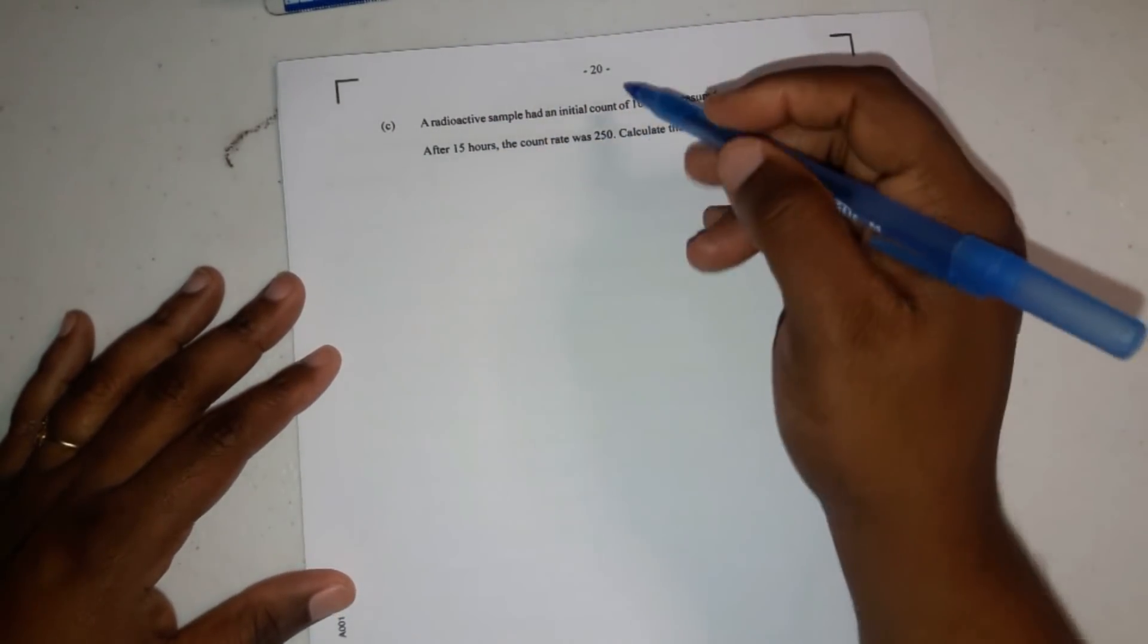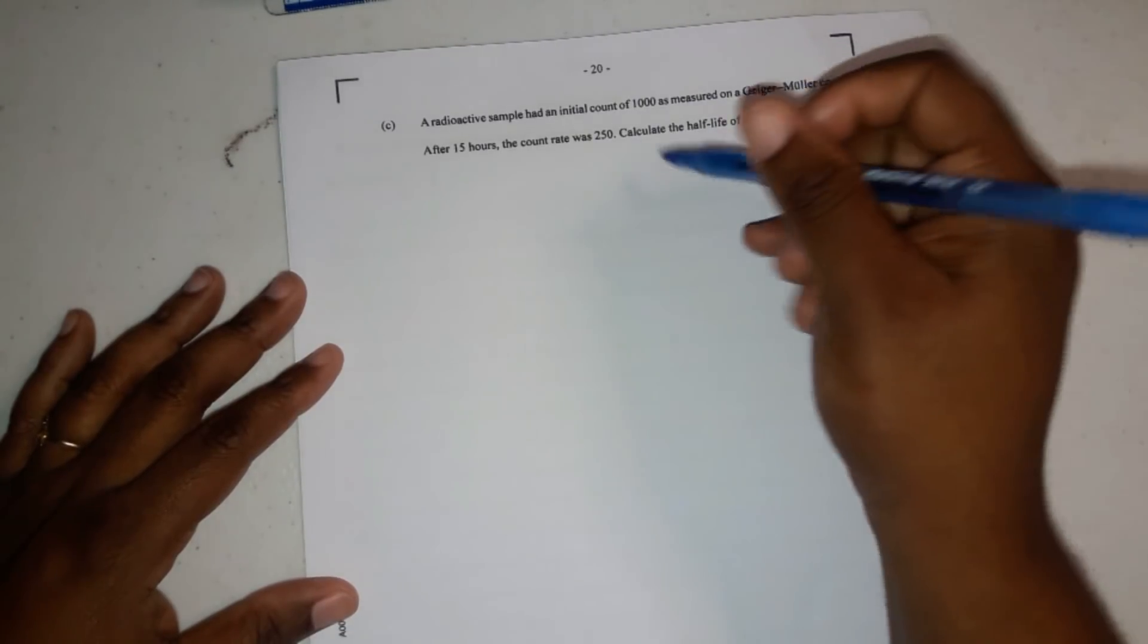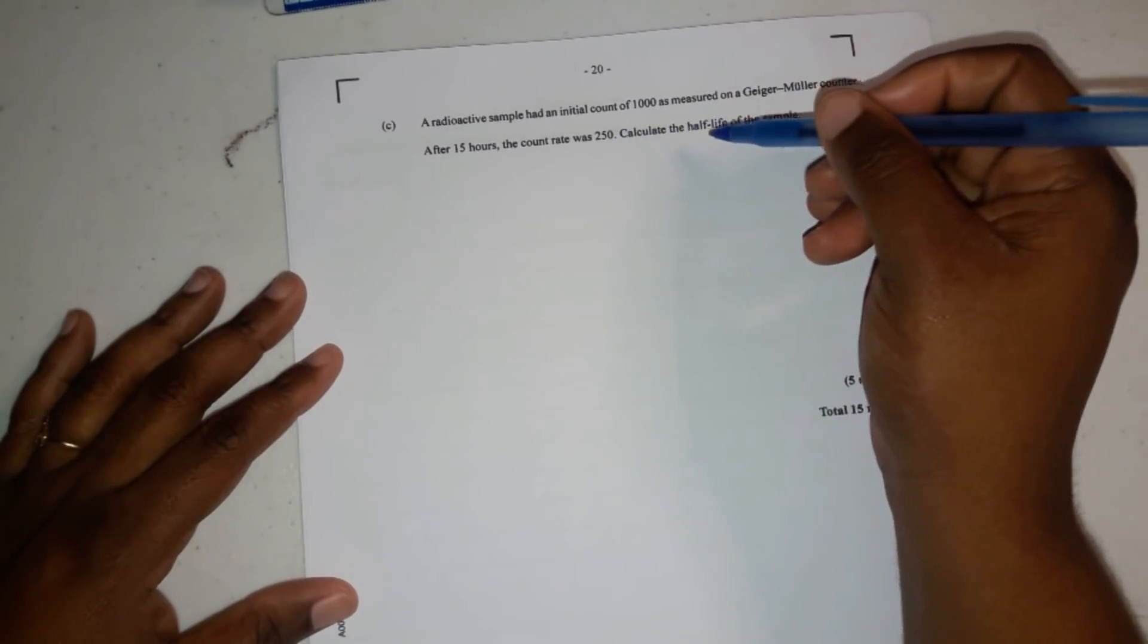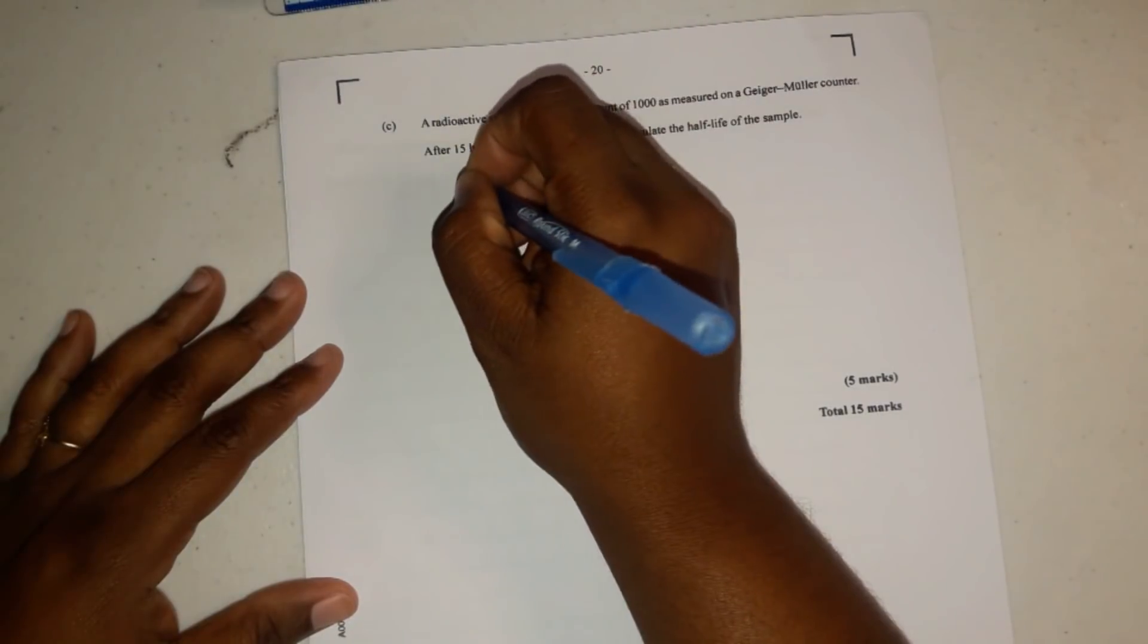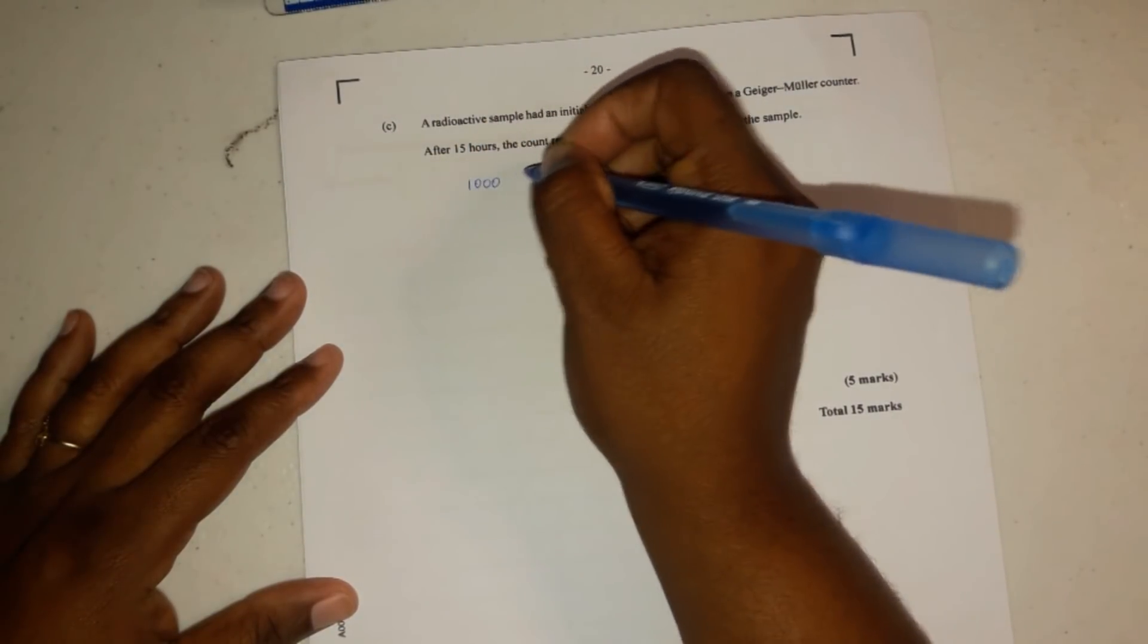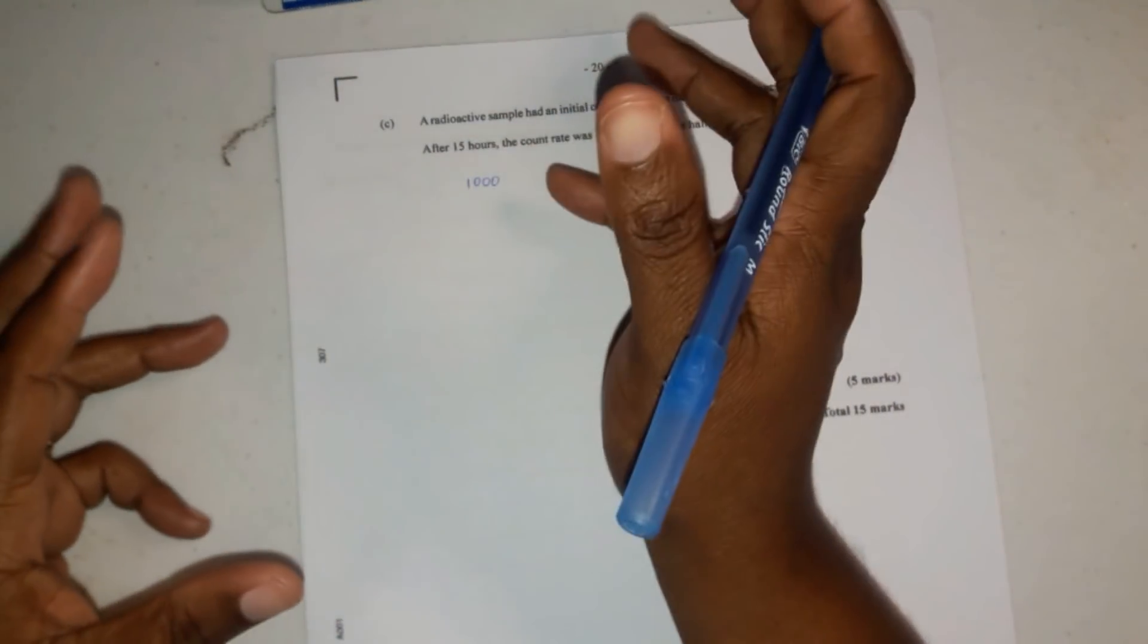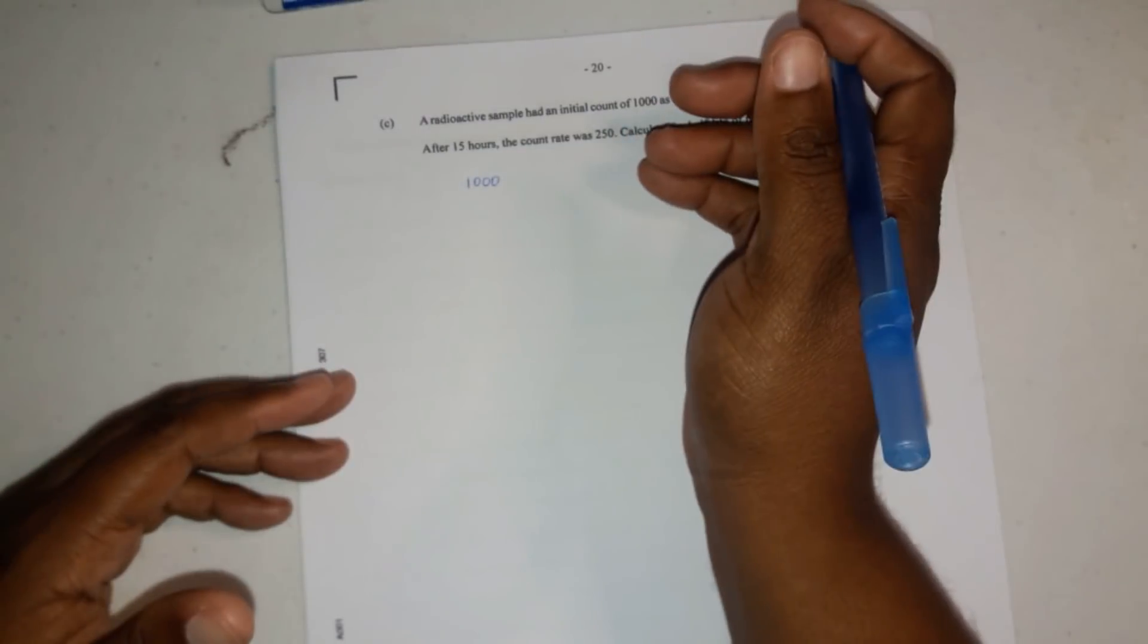Okay, now it says a radioactive sample had an initial count of 1,000 as measured on a Geiger-Muller counter. After 15 hours, the count rate was 250. Calculate the half-life of the sample. Okay, so remember half-life is the time it takes for the original sample to break down to half its original amount, right?